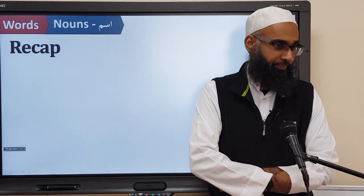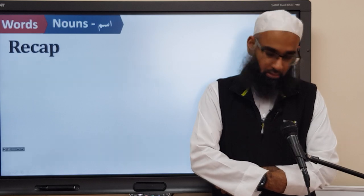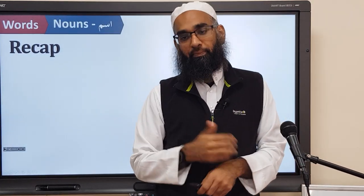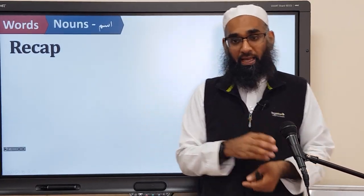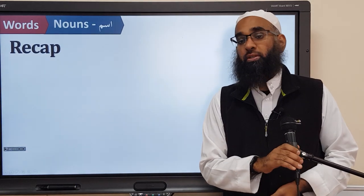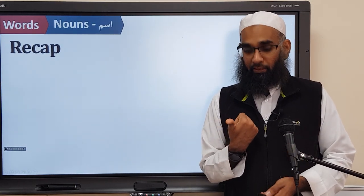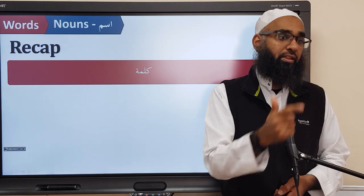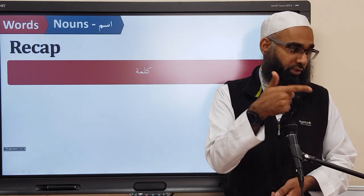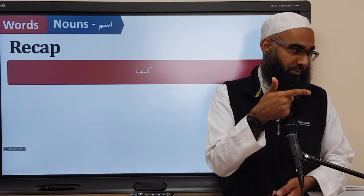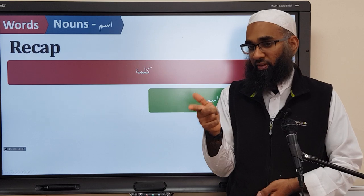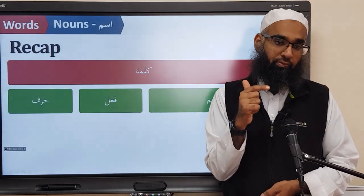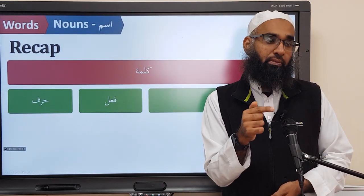So before we go on, I want to recap. What have we studied so far? What's the first thing we studied about words? What's the word called? Kalima. Very good. Kalima — how many types of kalima are there? Three types. What are they? Ism, fa'al, harf. Correct — ism, fa'al, and harf.